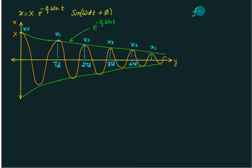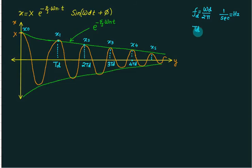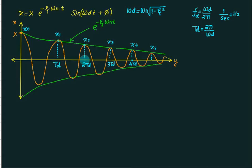Frequency is omega upon 2 pi. Since we have damping, this is the damped frequency. Taking the reciprocal gives us td — t for time, d for damped — which equals 2 pi divided by omega d. And omega d itself is omega n times the square root of 1 minus zeta squared. So this is what td is.